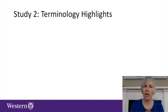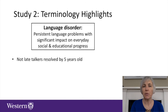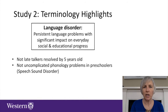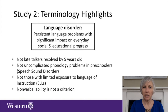Let me review the terminology highlights from study two. There was agreement that the overarching term should be language disorder, identifying persistent language problems with a significant impact on everyday social and educational progress. This language disorder was not considered to refer to late talkers who resolved by five years old, because that problem is not persistent. Nor did it refer to uncomplicated phonology problems in preschoolers who may be considered to have a speech sound disorder. It's not those whose sole problem is limited exposure to the language of instruction, for example, English language learners. And nonverbal ability was not set as a criterion.